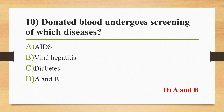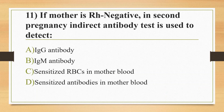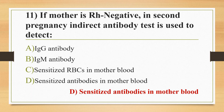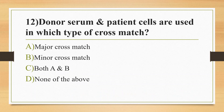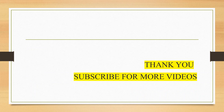Cytomegalovirus, Toxoplasma gondii, and Trypanosoma brucei and cruzi are also transmitted through blood transfusion. Eleventh question: if the mother is Rh negative and in second pregnancy an indirect antibody test is used to detect — option A: IgG antibody, option B: IgM antibody, option C: sensitized RBCs in mother's blood, option D: sensitized antibodies in mother's blood. The answer is option D — sensitized antibodies in mother's blood. The maternal serum contains antibodies against the Rh positive second baby. Sensitized RBCs in mother's blood can be detected by direct Coombs test.